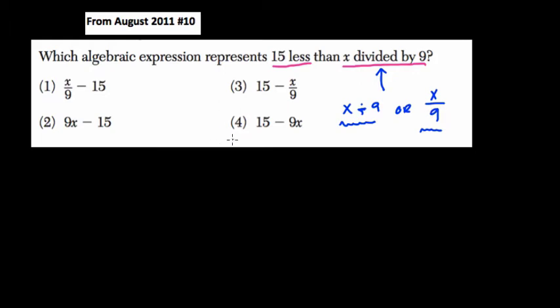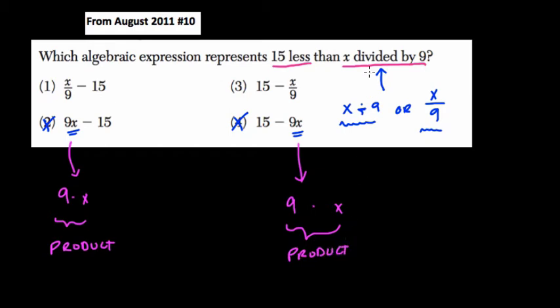So the three choices here, we can automatically get rid of 4 and 2, because in those two choices, they give us 9x. And what does that mean? Well, 9x means 9 times x. And the same thing here, and that is referring to what? Well, that's referring to the product. This is a product, and this right here is a product as well. But they're talking more about division here. They're talking about the quotient.